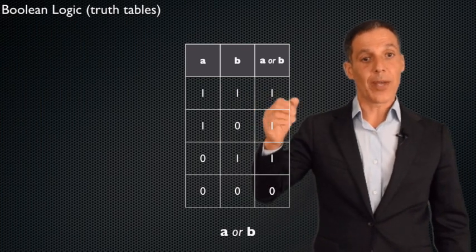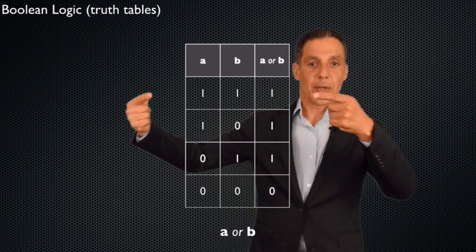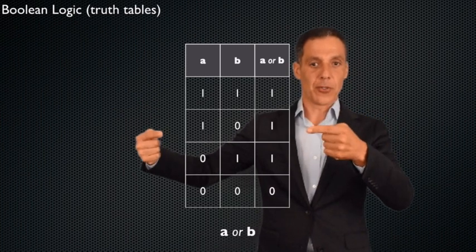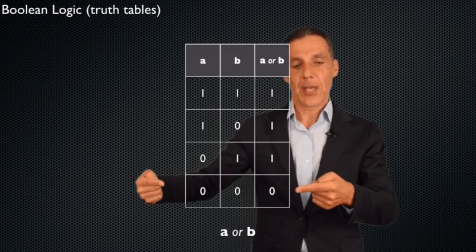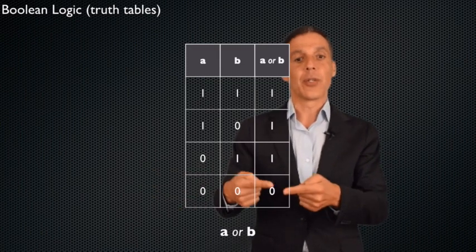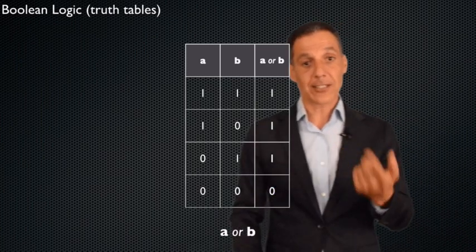Now remember that an OR is true if one or more of the statements are true. Here, they're both true, so the OR is true. A is true, so the OR is true. B is true, so the OR is true. And here, of course, neither are true, so the OR of them is false. That's a logical OR.